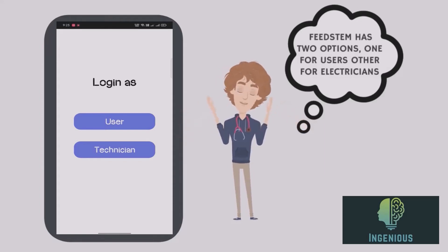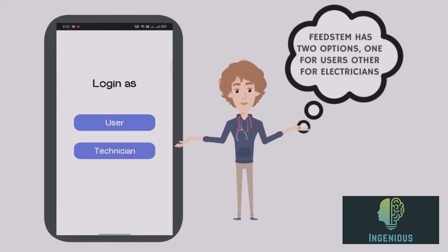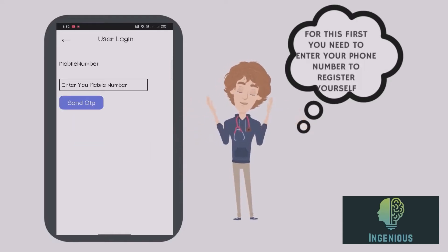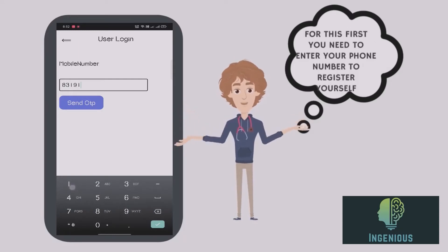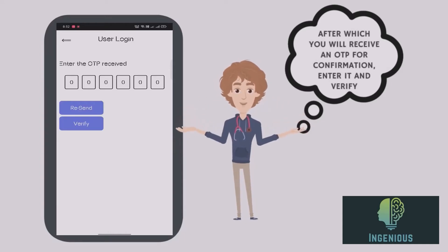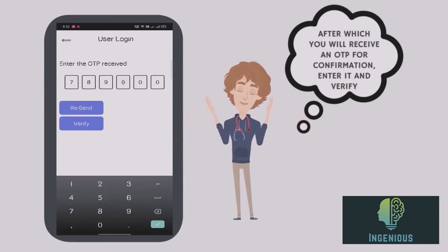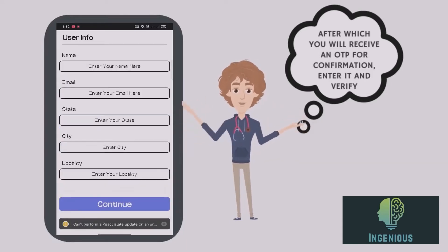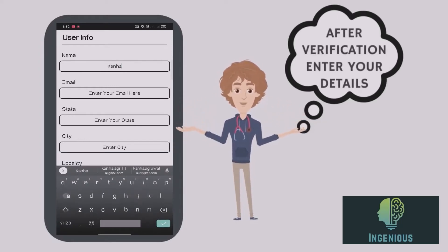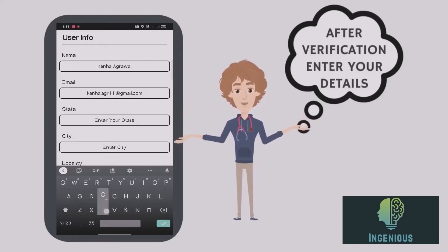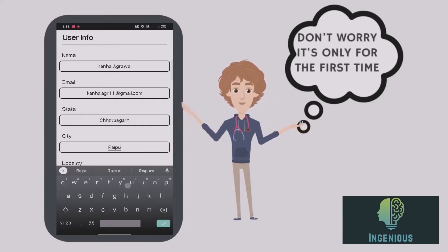The Feedback System has two options: one for the user and one for the electrician. When you click on user, you first need to sign up. For the first time, you enter your number to register yourself, after which you receive an OTP for confirmation — enter it and verify. Don't worry, it's only for the first time.